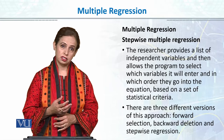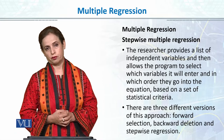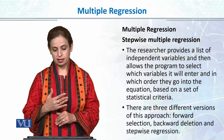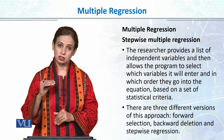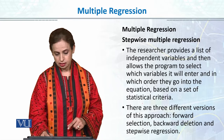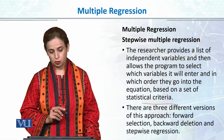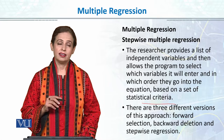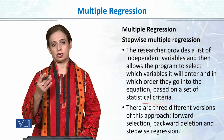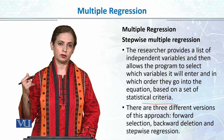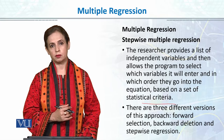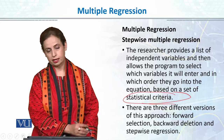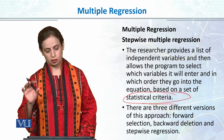Stepwise regression selects statistically stronger predictors and removes the weaker ones. The researcher provides the independent variables and allows the program to select which variables to retain based on statistical criteria. There are three various approaches: forward selection, backward deletion, and stepwise regression. In hierarchical regression you control the entry of variables yourself, but in stepwise, it is the statistical criteria that determine which predictors are retained and which are deleted.